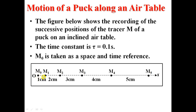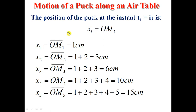The abscissa of M0 is 0. The abscissa of M1 is OM1, which is 1. The abscissa of M2, the abscissa of M3 equals to OM3: 3 plus 2 plus 1 equals 6. The abscissa of M4 equals OM4. The abscissa of M1, OM1; abscissa of X2, OM2.